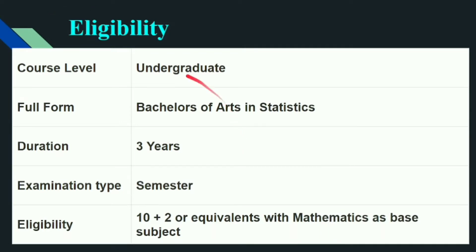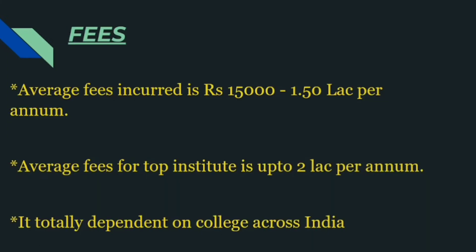First, let's discuss eligibility. This course is at the undergraduate level. The full form is Bachelor of Arts in Statistics. The duration is three years, as it is a bachelor's degree. The examination type is semester-based, depending on the college. The eligibility criteria require 10+2 (twelfth grade) with Mathematics as a base subject. Some colleges also conduct their own entrance/mask exam which you need to qualify to get admission.